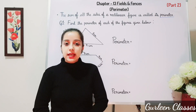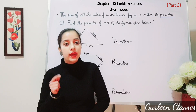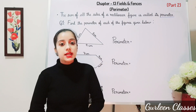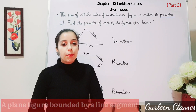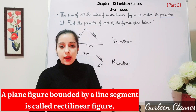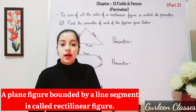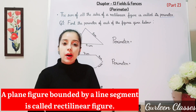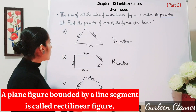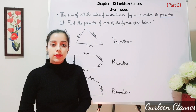In my previous lecture, I told you all about perimeter and we discussed different questions based on that. So here let us do a quick recap. What is a perimeter? The sum of all the sides of a rectilinear figure is called its perimeter. A plane figure bounded by a line segment is called a rectilinear figure. Examples are triangle, square, pentagon, hexagon, etc. But a circle is not a rectilinear figure, as it is round in shape and is not made up of line segments.